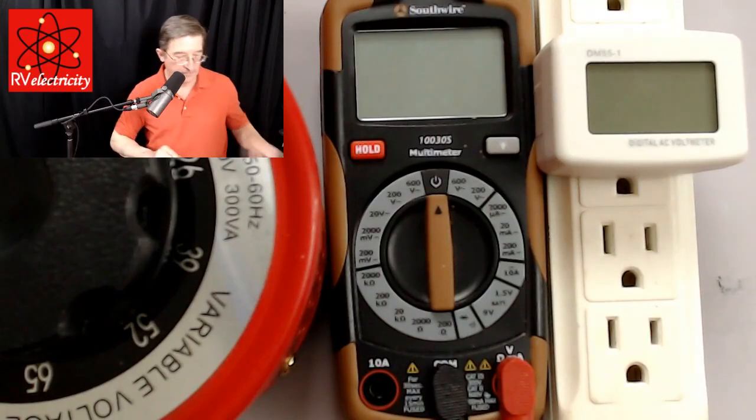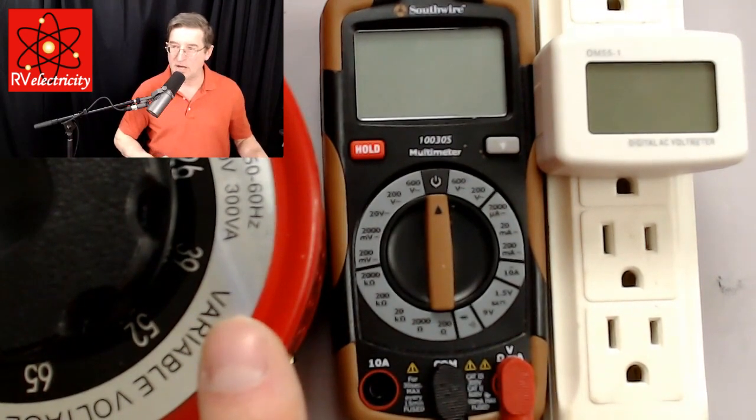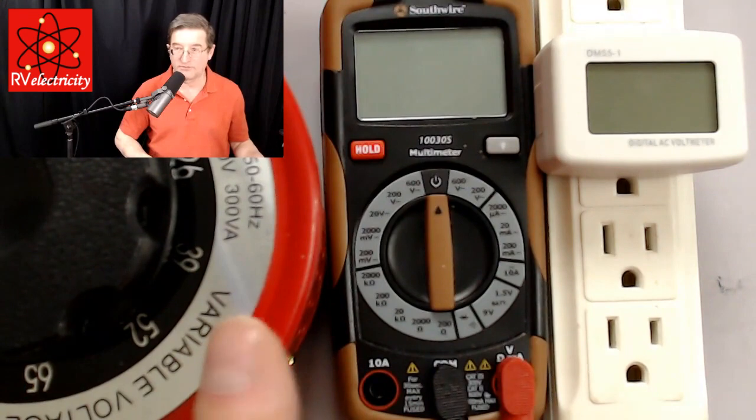Let me show you what I've got going on over here. All the way on the left I have what's commonly called a Variac. It's a variable AC transformer which allows me to adjust the voltages from zero to 140 odd volts.